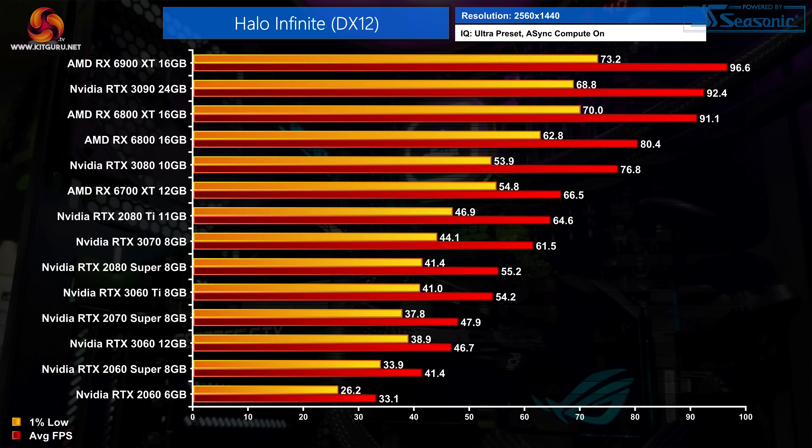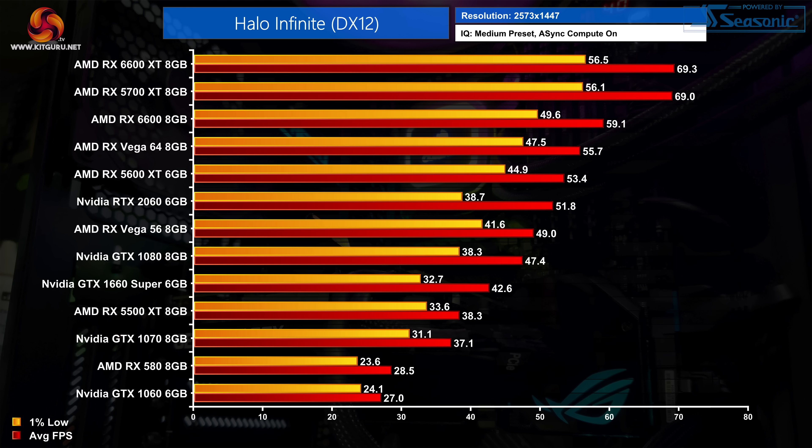You'll need at least an RX 6800 just to keep the 1% lows above 60 FPS at 1440p. And at the very top of the chart, the 6900 XT is still the top dog, though the RTX 3090 isn't too far behind.